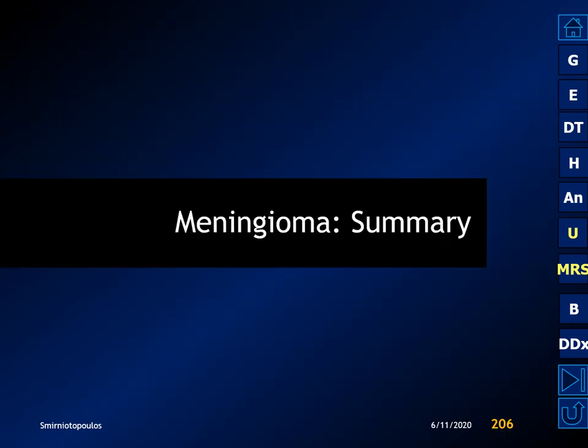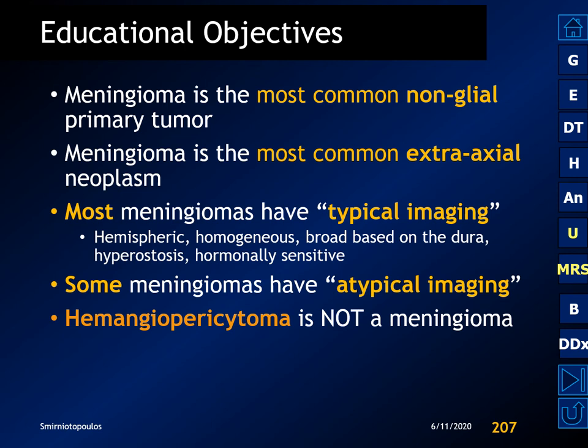In summary, meningiomas are the most common non-glial primary tumor and the most common extra-axial neoplasm. We saw multiple examples of the typical appearance as a hemispheric homogeneous mass with a broad base of dural attachment, often showing hyperostosis, and twice as common in women due to hormonal sensitivity. We also saw atypical imaging variants including fatty metaplasia and the humid meningioma, and finished with the differential diagnosis of dural-based lesions including hemangiopericytomas and primary and metastatic bone tumors. Thank you very much for your attention.